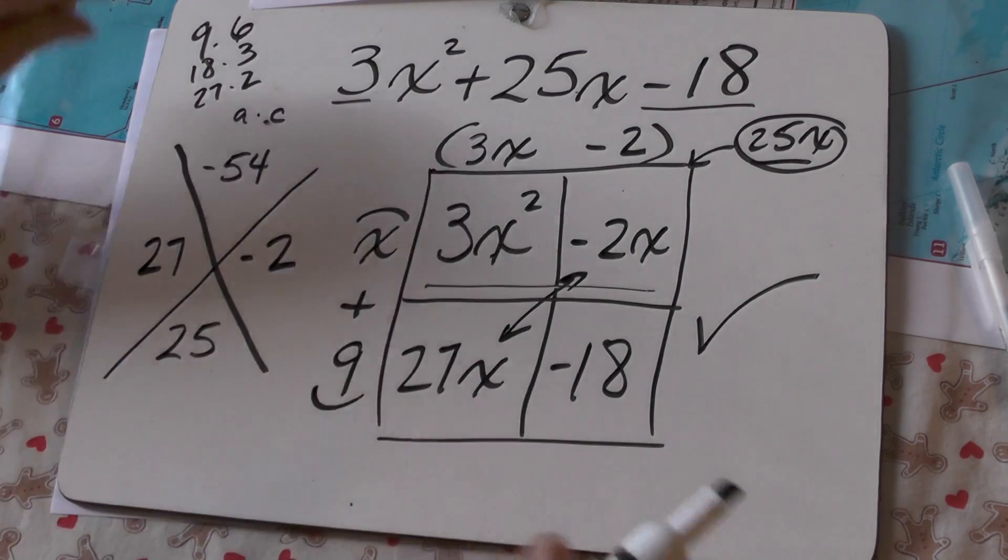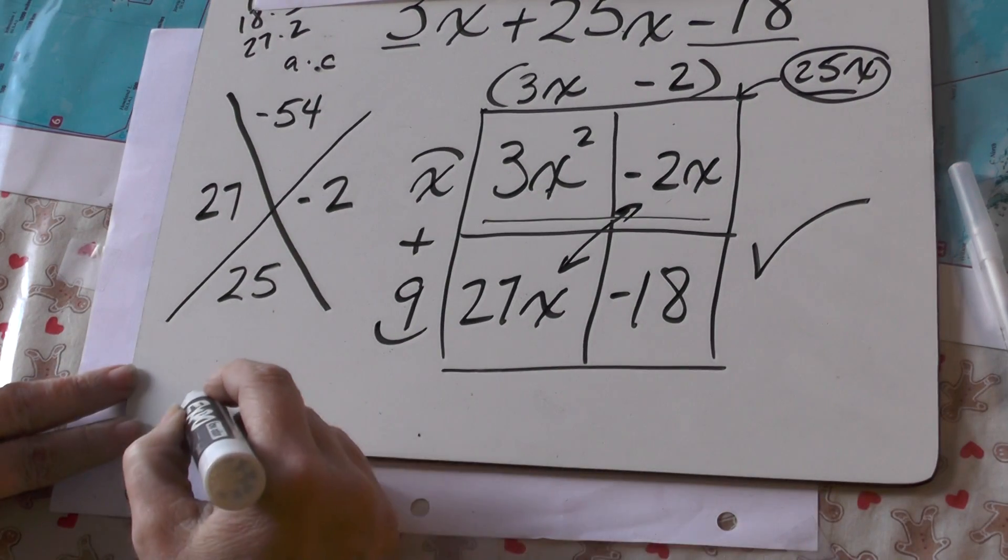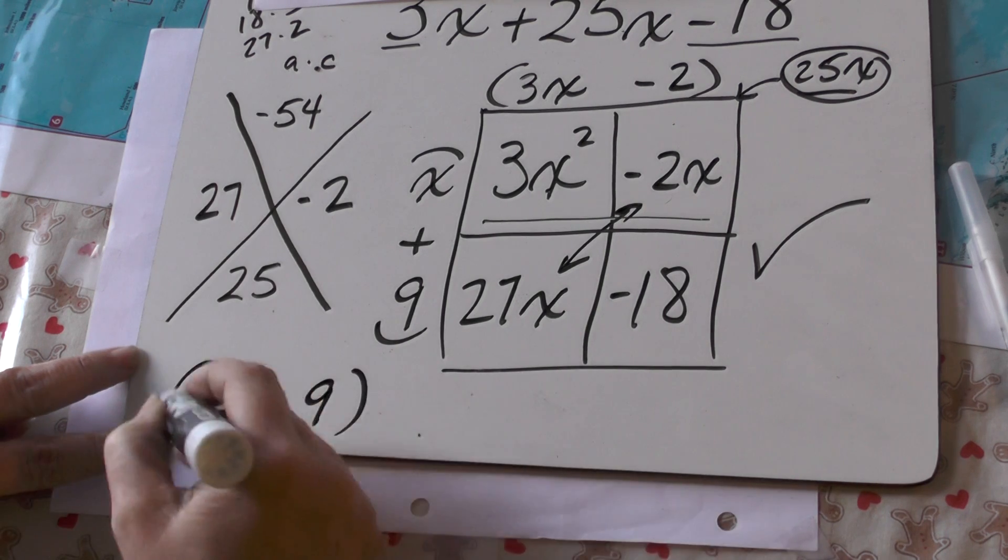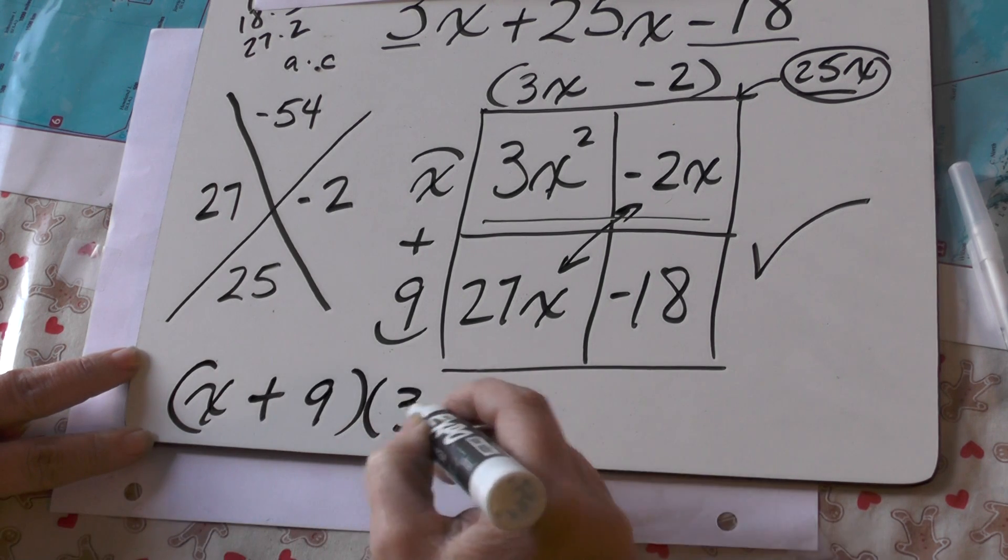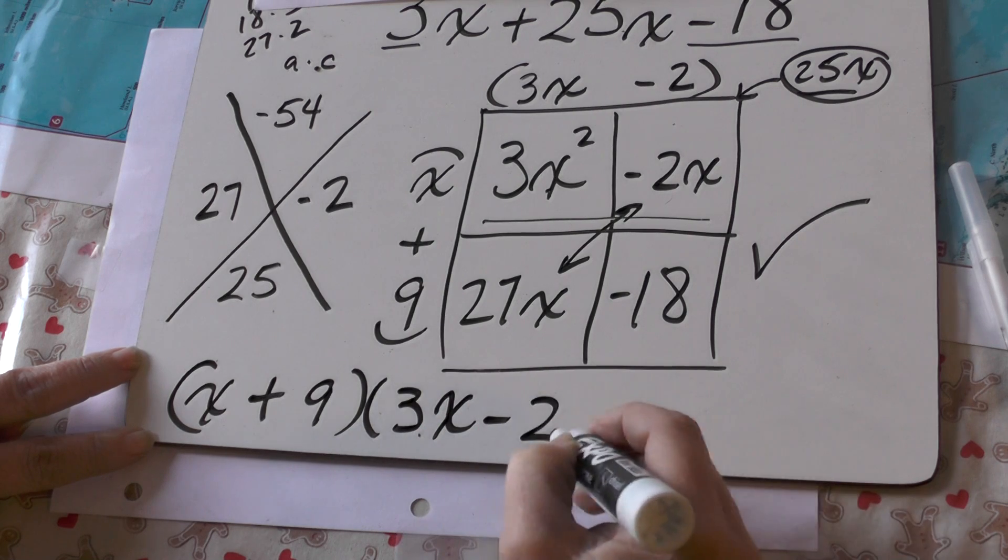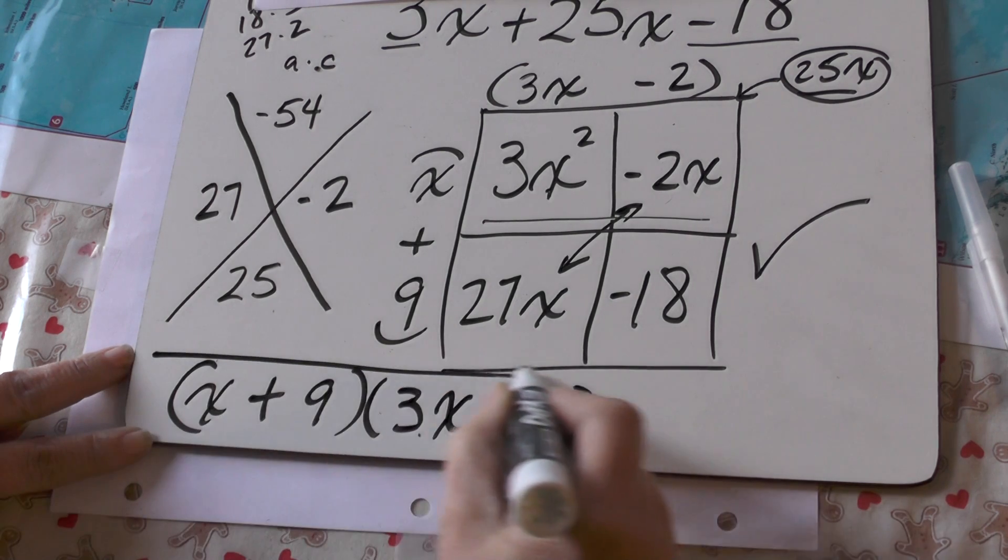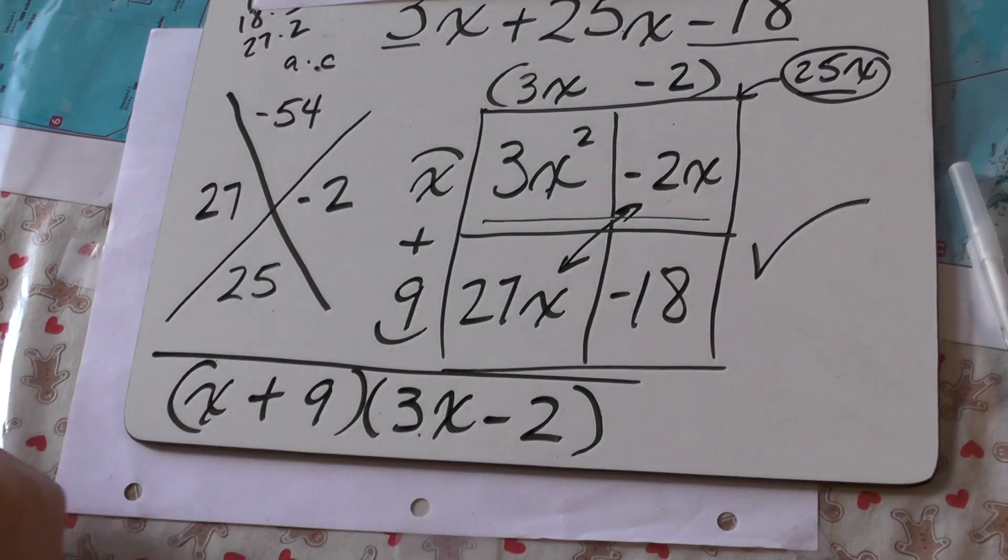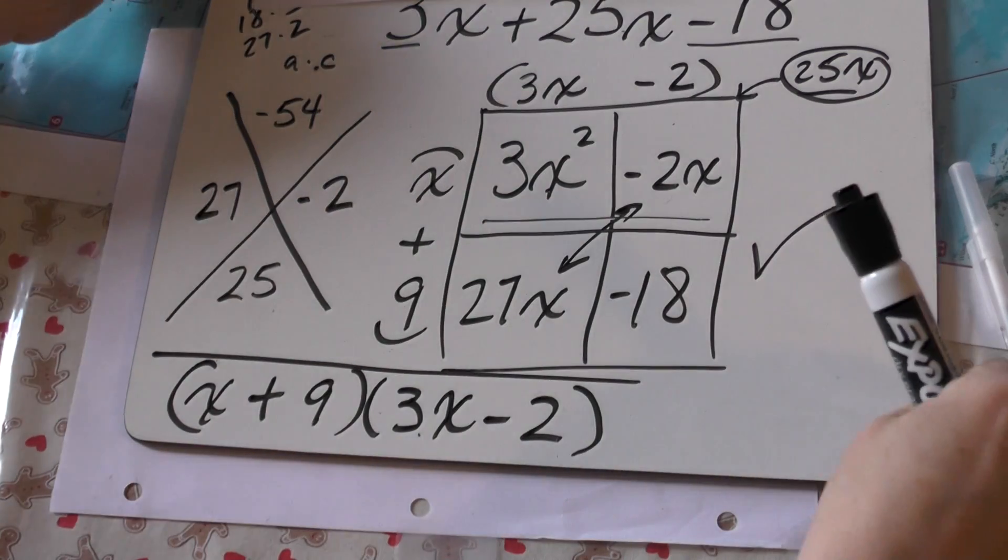Okay? If I want to, I could just rewrite it down here. It is (x + 9) times (3x - 2). Done. A lot easier than just trial and error or guessing and checking. It takes the guesswork out.